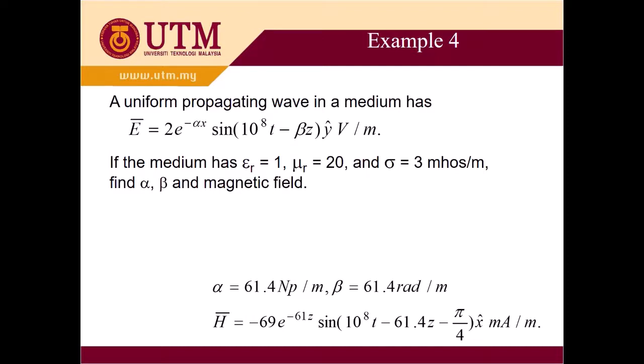A uniform propagating wave in a medium has E equal to 2e^(-αx) sin(10^8 t - βz) ŷ V/m. If the medium has epsilon_r equal to 1, mu_r equal to 20 and sigma equal to 2 mho per meter, find alpha, beta and magnetic field. So basically, you are given the E-field.